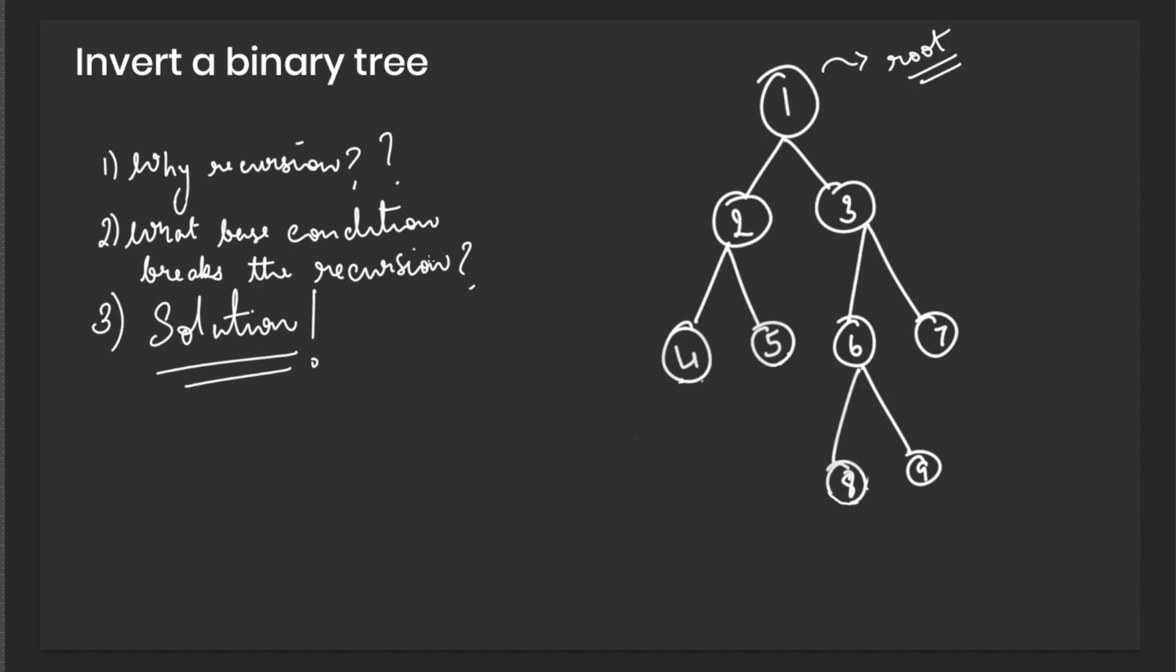Second question that we need to ask is which base condition do we need to use to break the recursion? What negates the recursive function? In this case, we need to negate the recursive function if we reach a leaf node which has no further children.